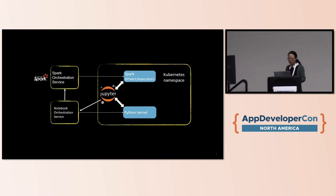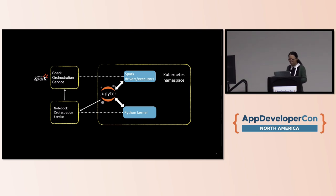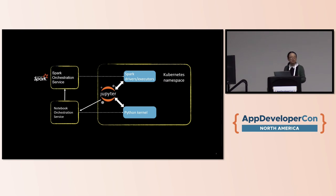A little bit of context about our data science environment. We offer our users notebook as a service, which means orchestrating a Jupyter Notebook server and notebook kernels on users' demand in a Kubernetes environment. Jupyter Notebook servers offer an interactive online coding experience to users, while the notebook kernels actually provide the compute power and power the code execution. Our service orchestrates both of those, and today we're focusing on orchestrating the kernels.